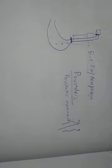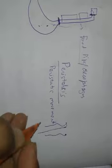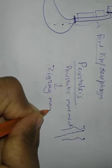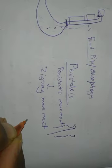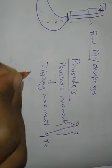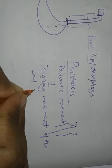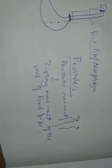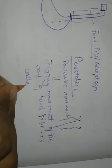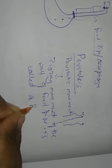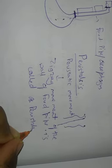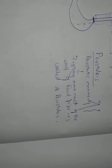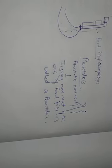This zigzag movement of the wall of the food pipe - the squeezing of the food pipe muscles causing a zigzag movement - is called peristalsis. So this is all about your food pipe.